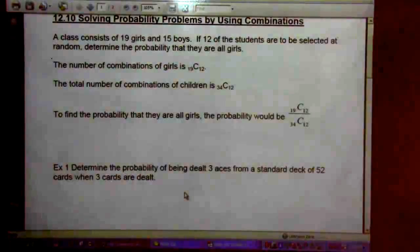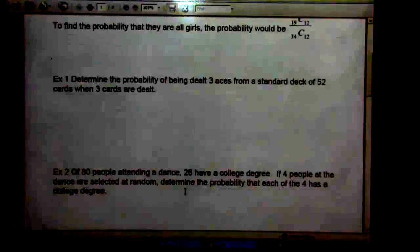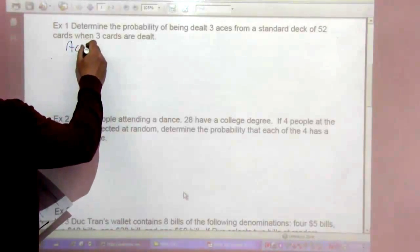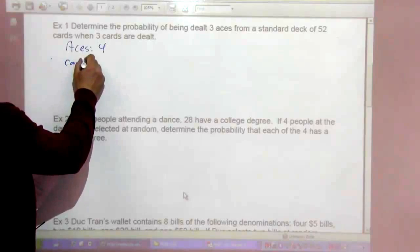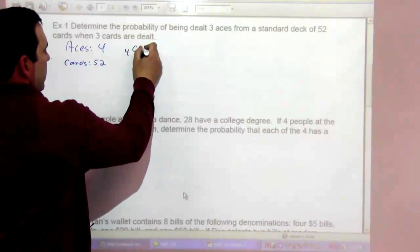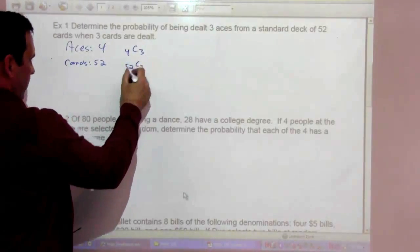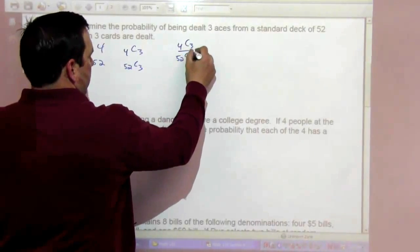Example 1: determine the probability of being dealt 3 aces from a standard deck of 52 cards when 3 cards are dealt. So we have aces, there are 4. Total cards, 52. So we're looking at 4 choose 3, because we want them all to be aces out of 52 choose 3. That's 4 choose 3 over 52 choose 3.